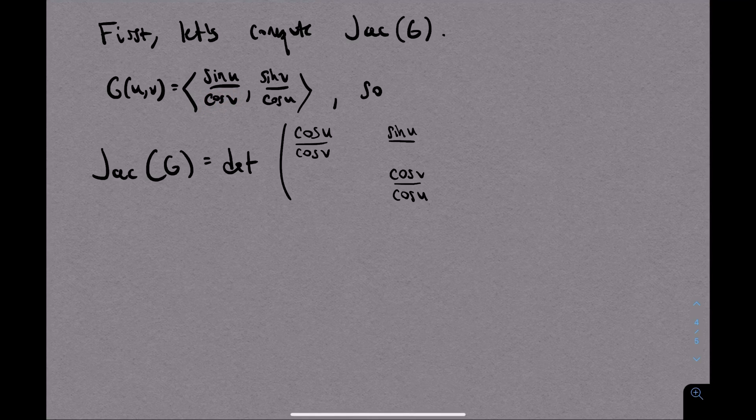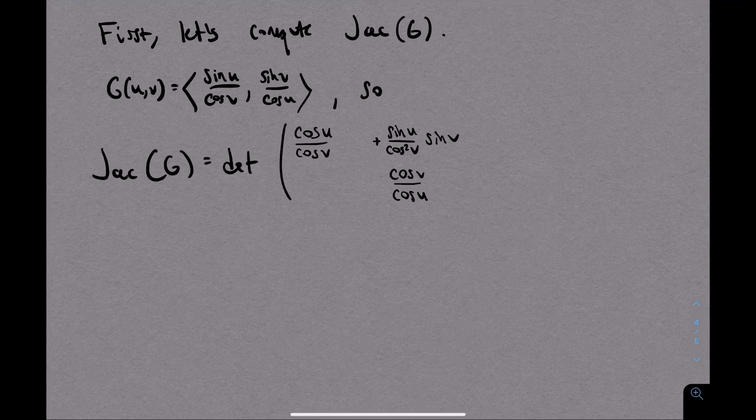The off-diagonal positions are a little less easy, but still straightforward. We want to think about, for example, the x component as being cosine of v to the negative 1. The power rule then gives me negative cosine to the negative 2, and then by the chain rule I'll multiply by negative sine of v. Those negative signs join together to become a positive. The lower left corner, the derivative of y with respect to u, is similar.